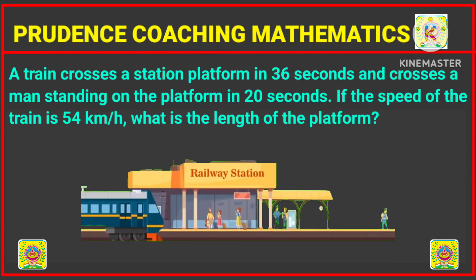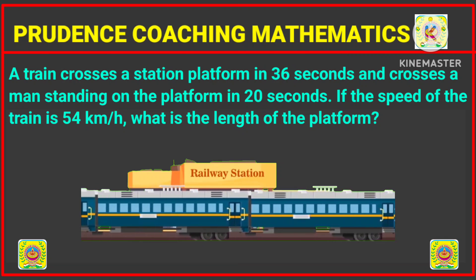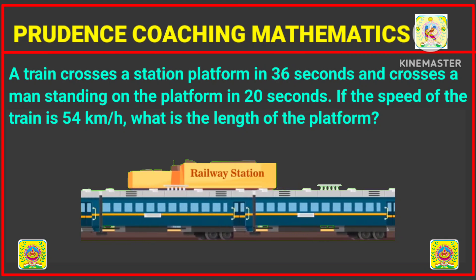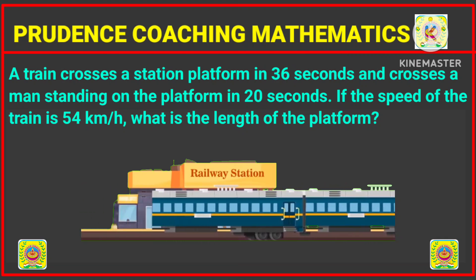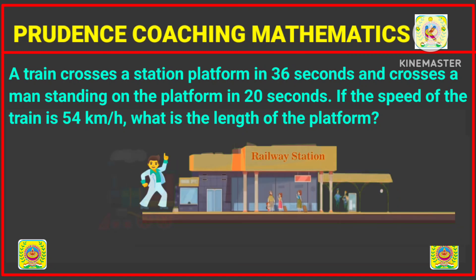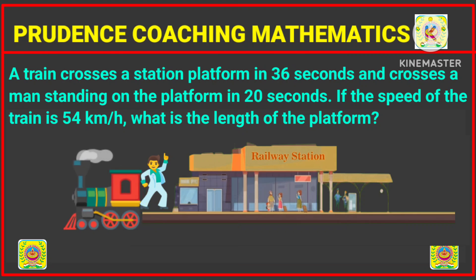As you can see, in the first case the train is crossing a platform, meaning it is crossing its own length plus the length of the platform, and it does so in 36 seconds. In the second case it is crossing a man — a man does not have any particular length — so it is crossing only its own length, that is the length of the train.